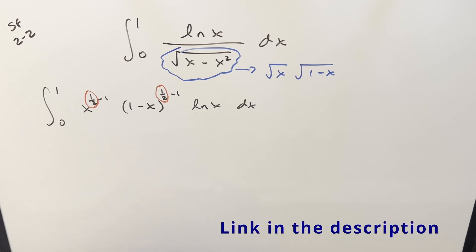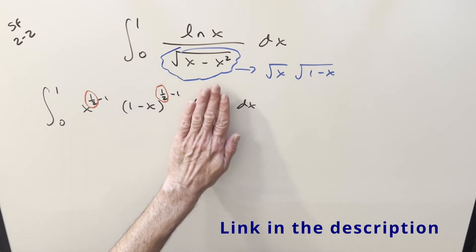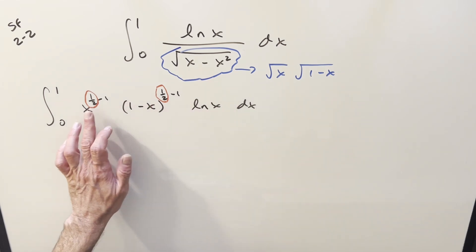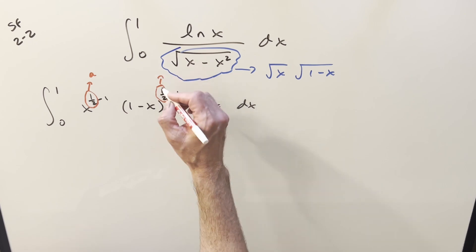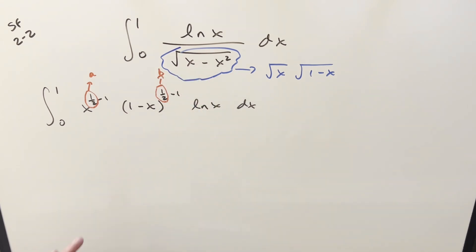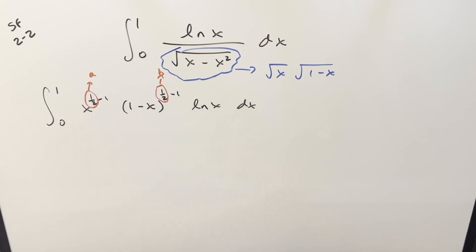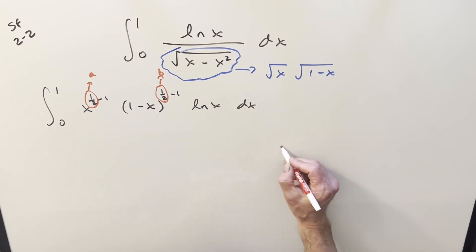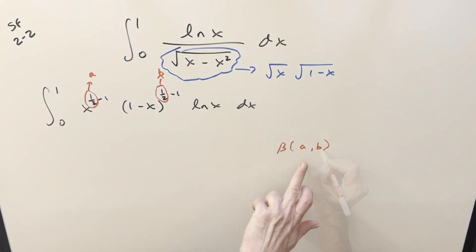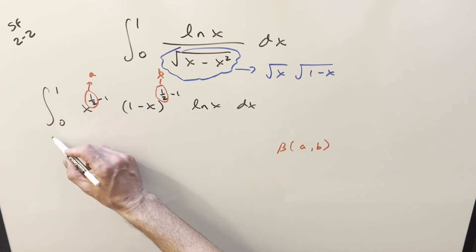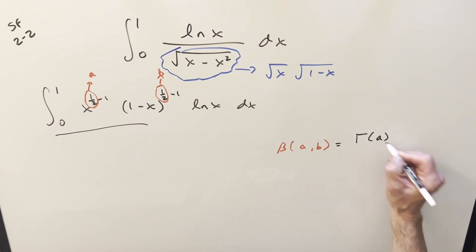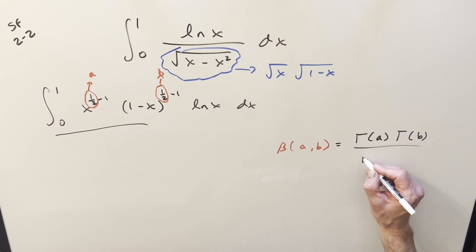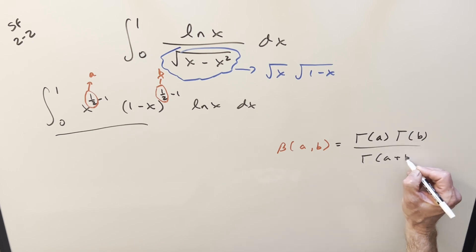What you can do is create an integral without the log and parameterize. I think you could do it either way, but the way I did it was to parameterize the exponent — we'll call this a and we'll call this b. I'm not going to redo that derivation since I have that other video, so I'll give you a link to that. When you differentiate, if we have the beta function — using the notation where it's just this integral — our definition is going to be in terms of the gamma function: gamma of a times gamma of b over gamma of a plus b.